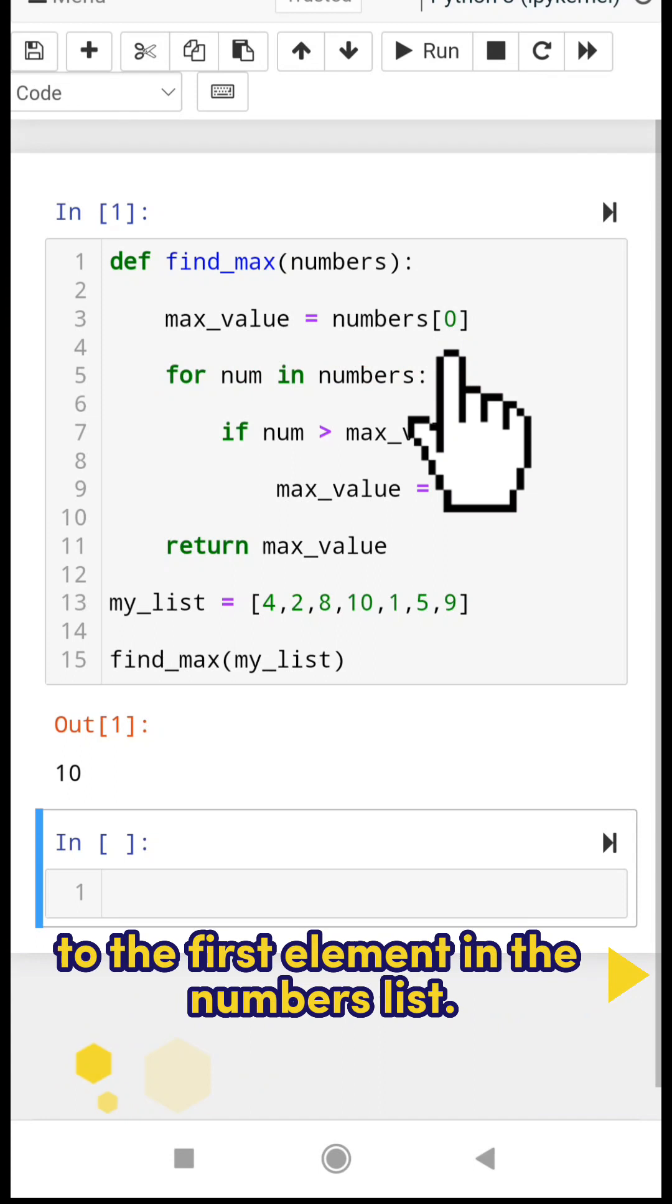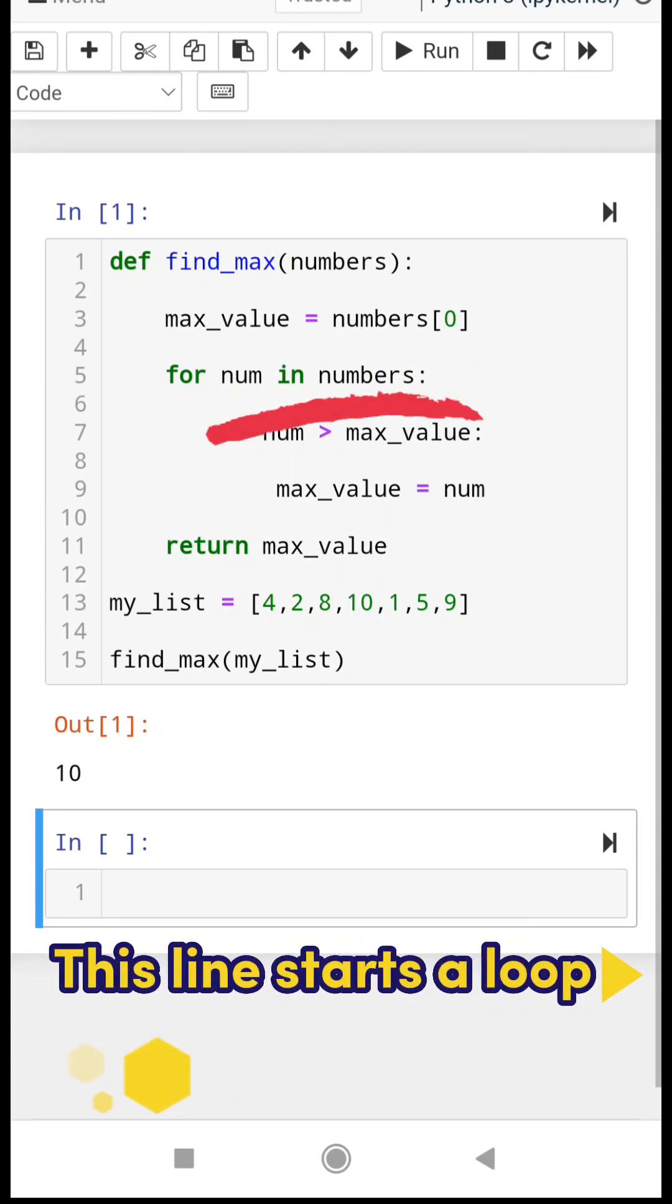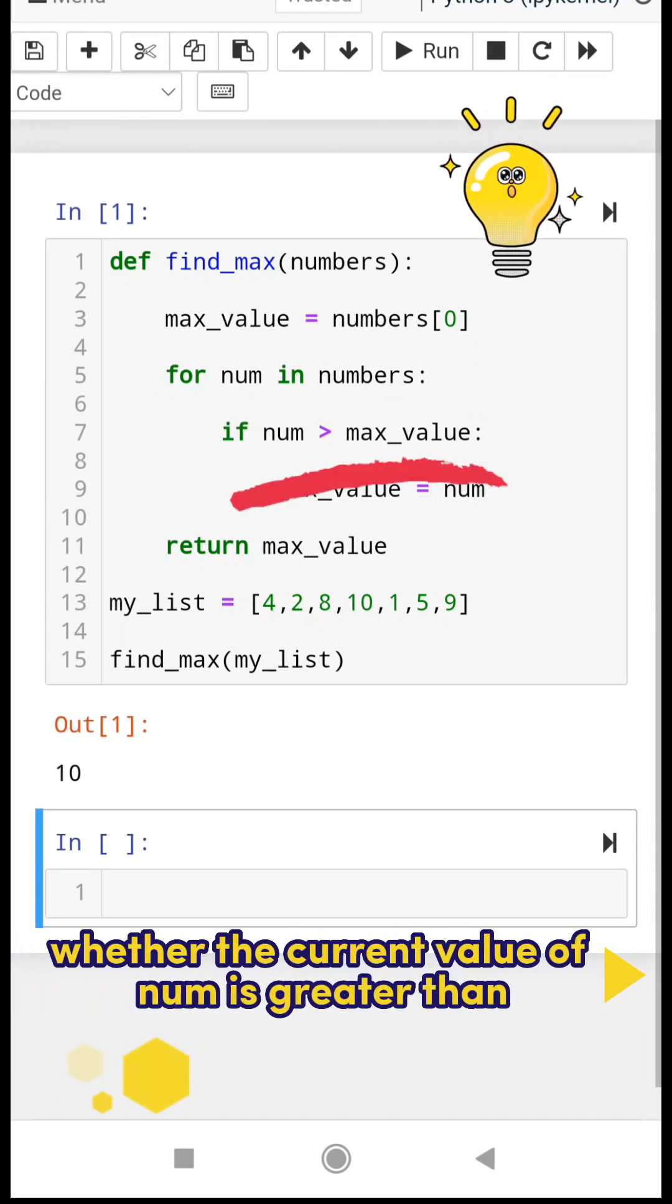This line starts a loop. This line checks whether the current value of num is greater than the current maximum value stored in max_value.